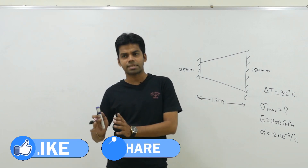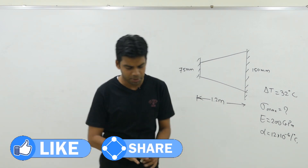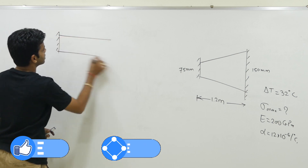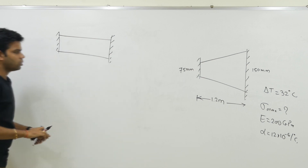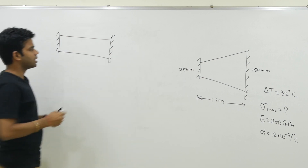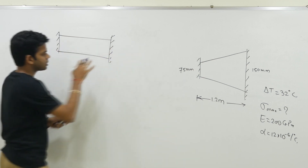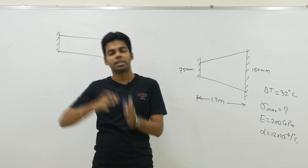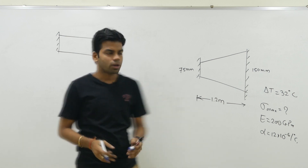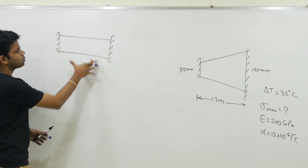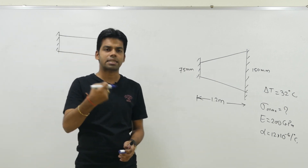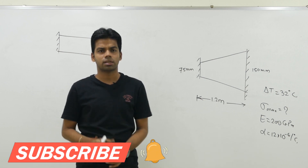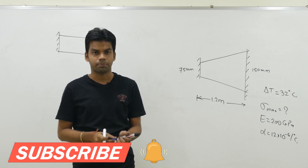Now how to solve such questions? I'll tell you a very simple method to solve thermal stress questions — if you understand this, you'll be able to solve every question. For example, let's suppose we have a uniform cross-section bar. The one thing to remember in thermal stresses is: if it was free to expand, how much would it expand? And these fixed supports are preventing that expansion by applying an external force.